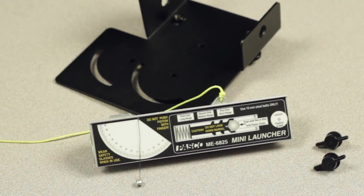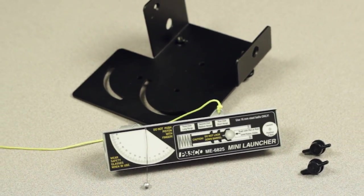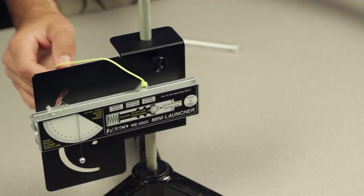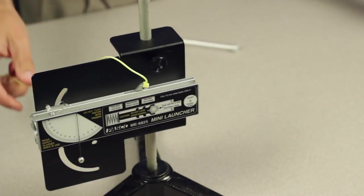The ME6825A Mini Launcher has been designed for projectile experiments and can be used to launch a projectile at angles between negative 45 to 90 degrees with high repeatability in projectile range.